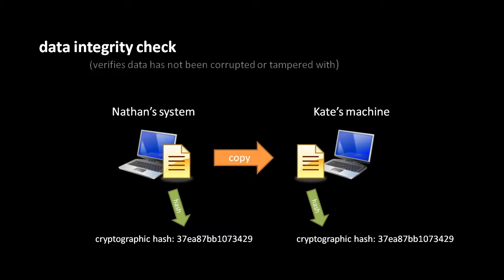However you do it, if the authenticity and integrity of the hash itself can be assured — like if Nathan wrote down the hash on a piece of paper and handed it to Kate in person — then when Kate runs the received file through the algorithm and checks the output against the hash she received, if they match, she knows for sure that this is the file, bit for bit, which Nathan intended to send to her.